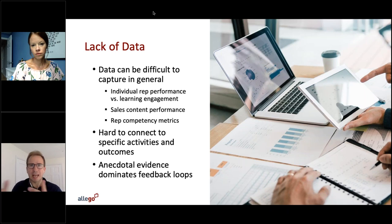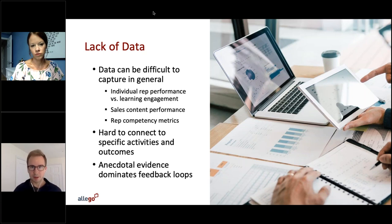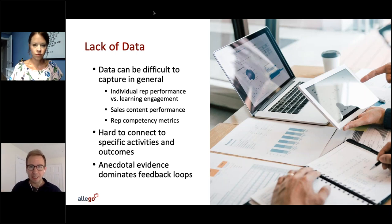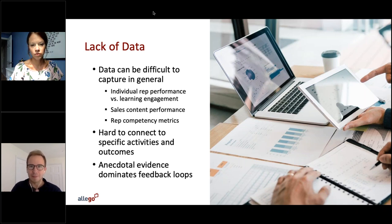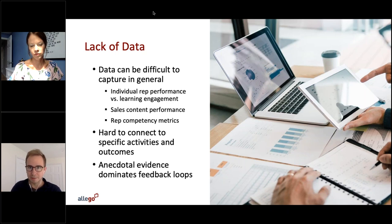Sales content performance is also hard to calculate — case studies, slide decks, one-pagers, all the collateral that enablement teams give to sellers. It's hard to understand the impact those pieces have on revenue unless you have a system to do that for you. And every single rep is different — some are really good at closing, some at prospecting, some at discovery. You can't just measure the aggregate group; you need to understand how each of them thrives or has shortcomings in order to fully understand how they need to be trained. We often fall back on anecdotal evidence rather than quantitative data.